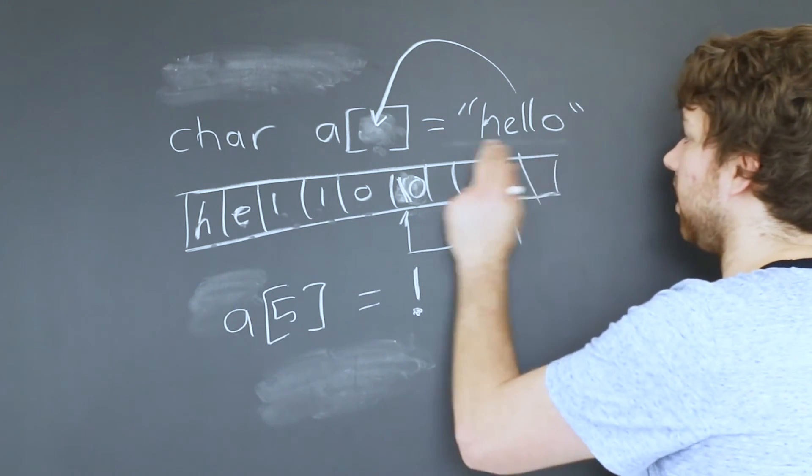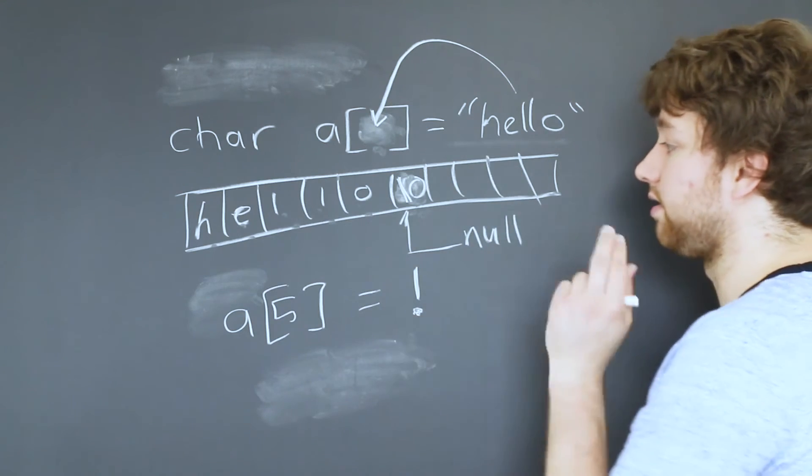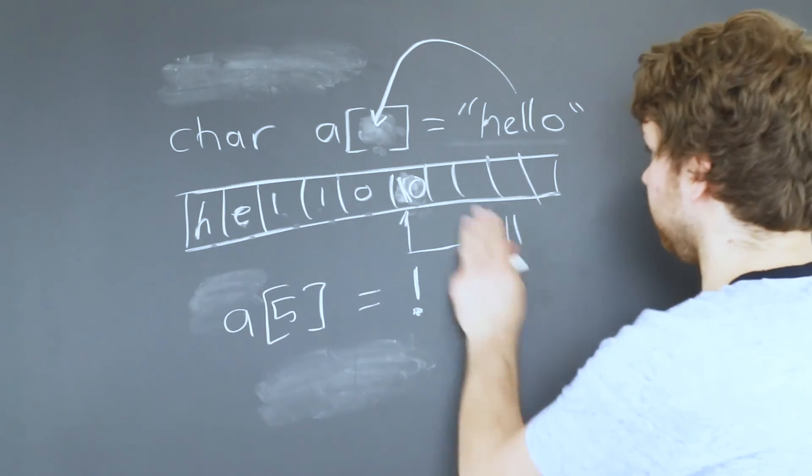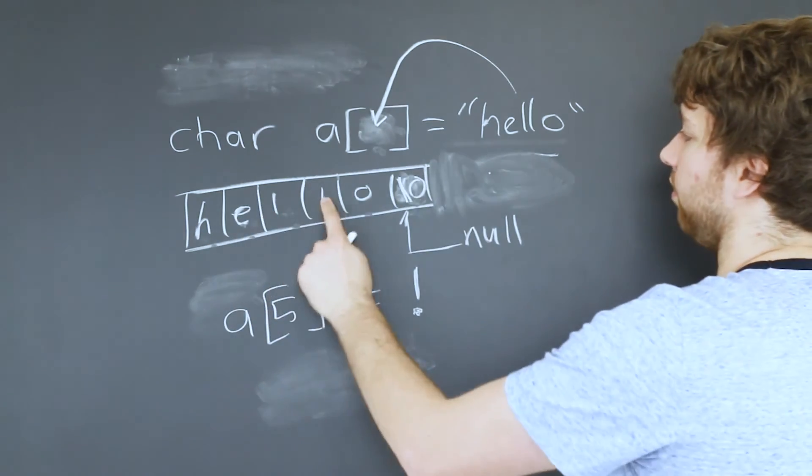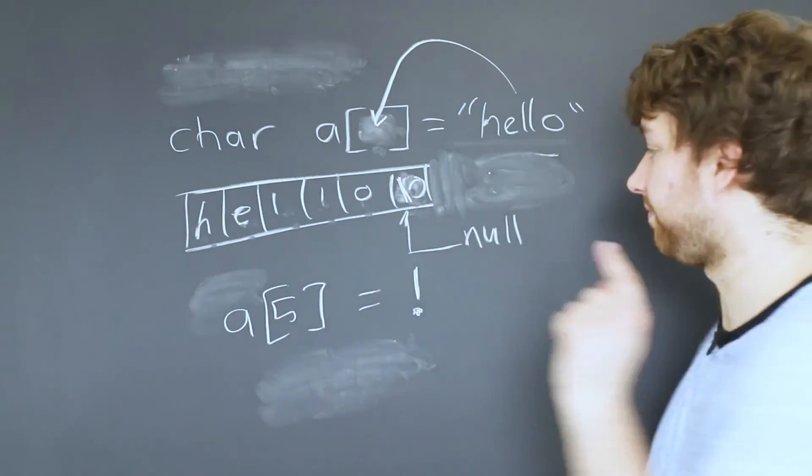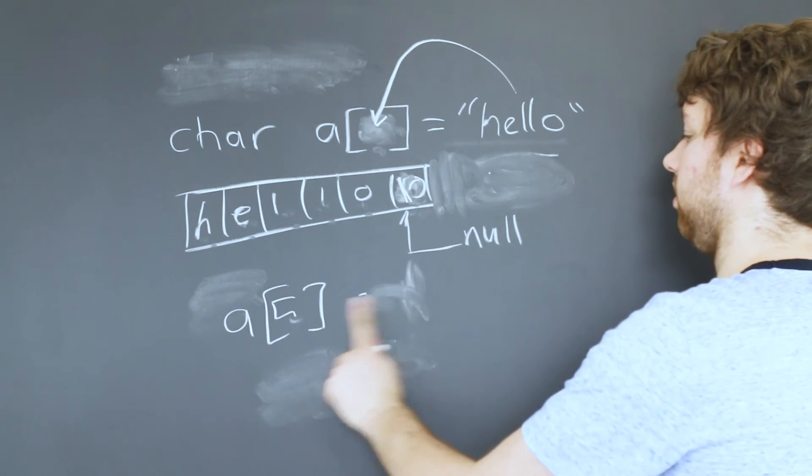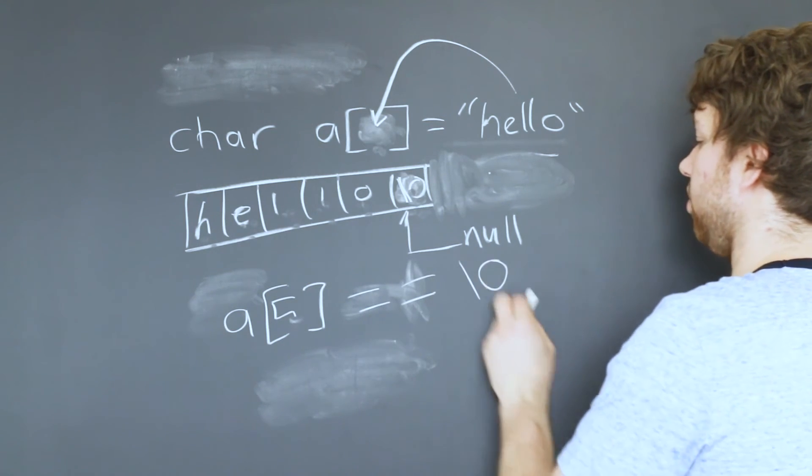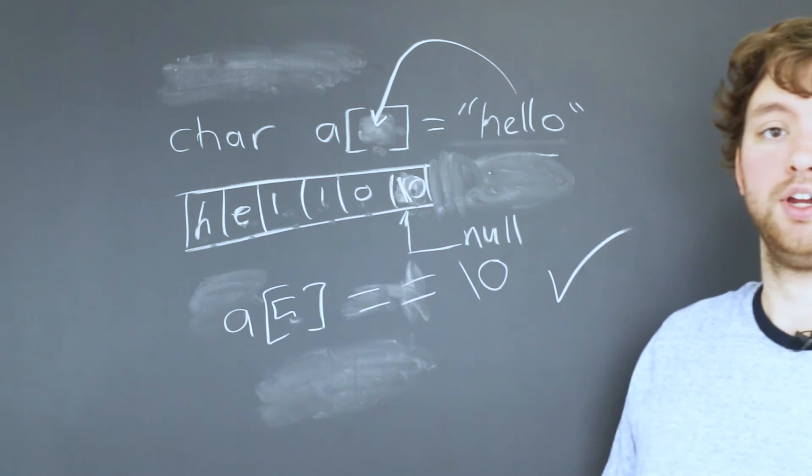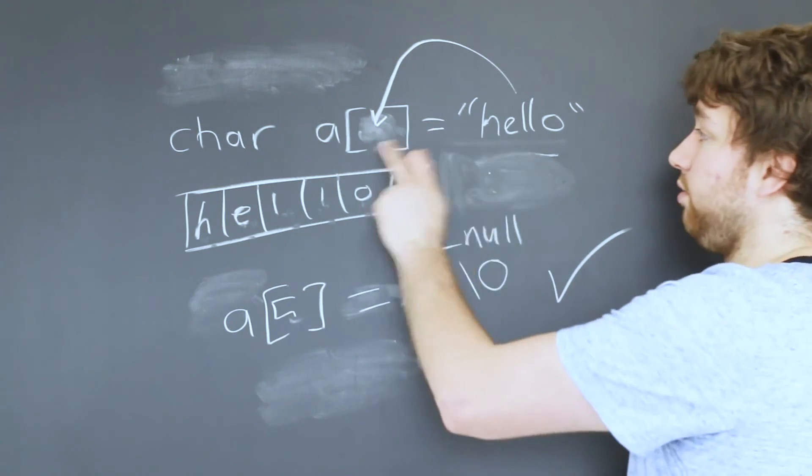And if you put in something like hello, the size would be six because it would look like this: one, two, three, four, five, six, and index five would be the null character. So the compiler can do that.